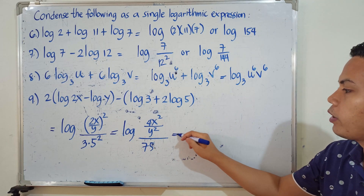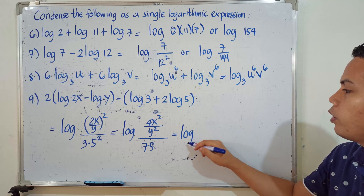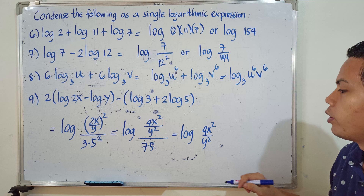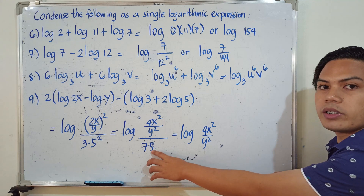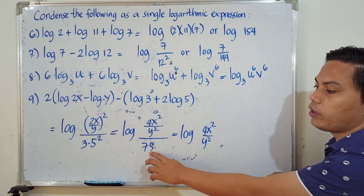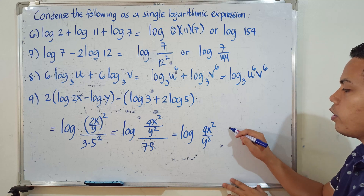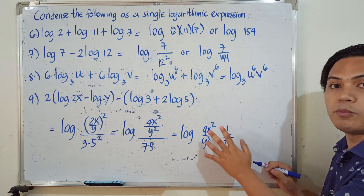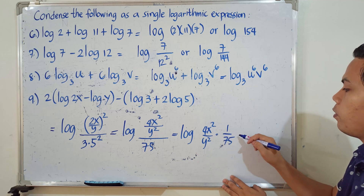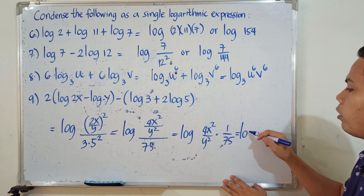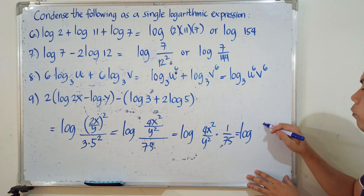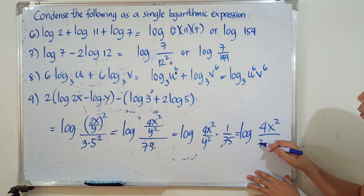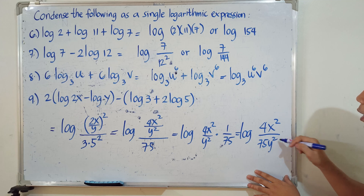Simplifying further, we write the reciprocal of 75 and multiply. The final answer is the logarithm of 4x² over 75y².